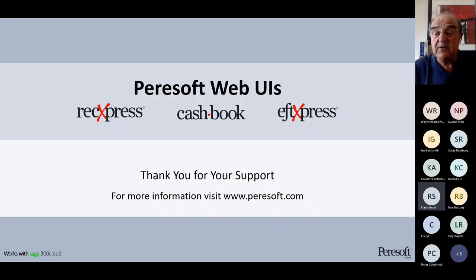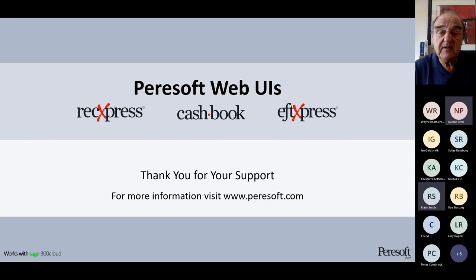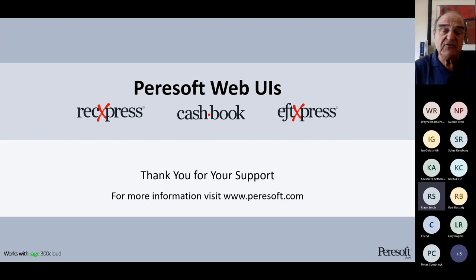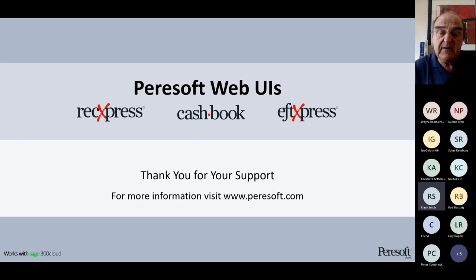Q&A: Peter asks — EFT Express does not show up during the installation process, only Rec Express and Cashbook. EFT installs automatically with Cashbook. You just activate it via the activation program within Administrative Services and it will appear in the menus. It has its own license file. So you don't have to install EFT Express separately.